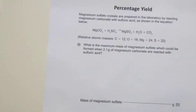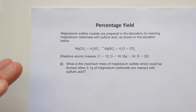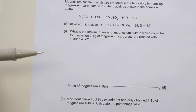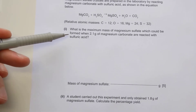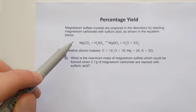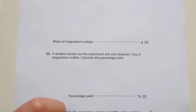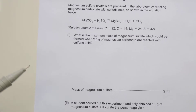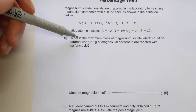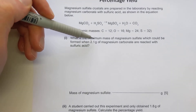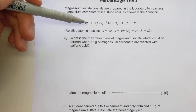The final question on this exercise is percentage yield - the last bit we looked at in the notes. Most of the time percentage yield comes on the end of a longer mole question. This one has a standard 5-mark reacting mass question, then a little 2-mark calculation on the end about percentage yield. The first part asks: what's the maximum mass of magnesium sulfate that could be formed when 2.1 grams of magnesium carbonate are reacted with sulfuric acid? Drawing the table first.